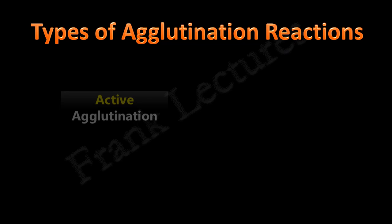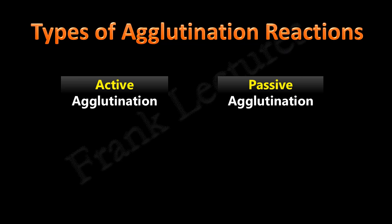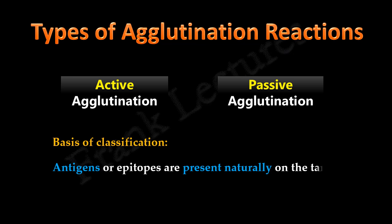Agglutination reactions are of two types: active agglutination and passive agglutination. This classification is based on whether the antigenic determinants or epitopes to which antibodies will bind are present naturally on the target cells or not.